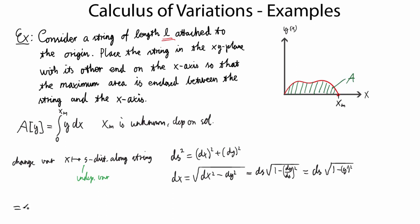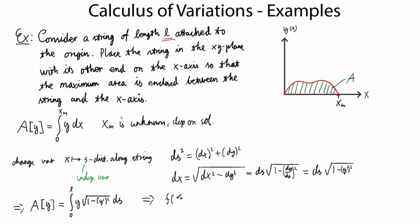Now we can cast this functional in a form we can actually solve. A is still a functional of y, but we're integrating from 0 to total length L: A[y] = integral from 0 to L of y times sqrt(1 - y'^2) ds. So the function inside the integral depends on y, y', and s.